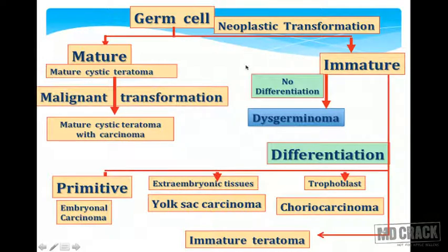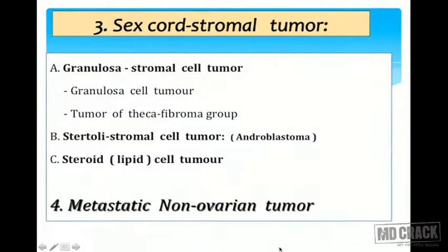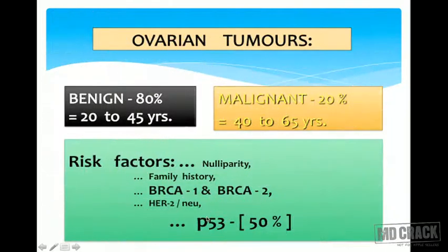Without differentiation, germ cell tumors form dysgerminomas — the malignant counterpart of seminoma. With differentiation: primitive differentiation gives embryonal carcinomas, extra-embryonic differentiation gives yolk sac carcinomas, trophoblastic differentiation gives choriocarcinomas, and if they remain immature we call them immature teratomas. Sex cord stromal tumors include granulosa cell tumor and thecoma-fibroma group associated with Meigs syndrome. Sertoli cell tumors — androblastomas — are rare and cause feminization or masculinization.